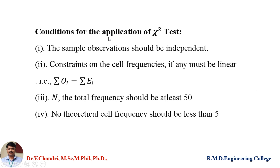What are the conditions for the application of chi-square test? First, the sample observations should be independent. Second, constraints on the cell frequencies, if any, must be linear — that is, summation of O_i equals summation of E_i. Third, the total frequency N should be at least 50. Fourth, no theoretical cell frequency should be less than 5.